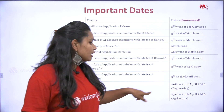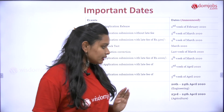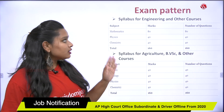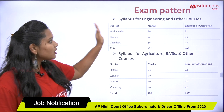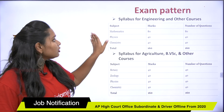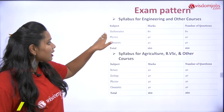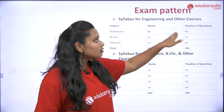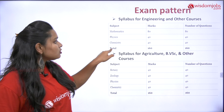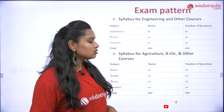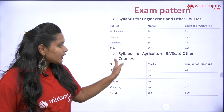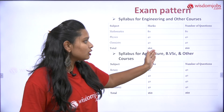The exam dates for engineering are from 20th to 24th April 2020, and for agriculture it is 23rd and 24th April 2020. Coming to the examination pattern and syllabus for engineering — the subjects are Mathematics, Physics, and Chemistry. Mathematics carries 80 marks for 80 questions, Physics 40 marks for 40 questions, and Chemistry 40 marks for 40 questions.